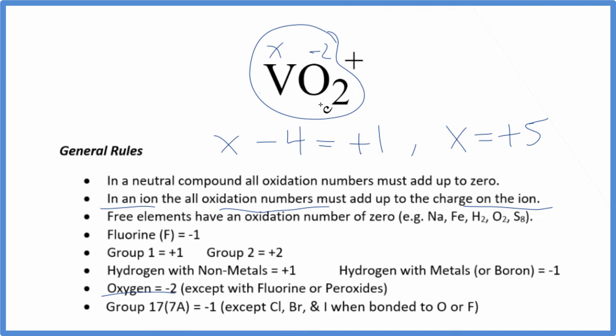In VO2 positive, that's going to be plus five. And if we add up all the oxidation numbers here on each element, that'll equal plus one. This is Dr. B with the oxidation numbers for VO2+ deoxy vanadium 5 ion. Thanks for watching.